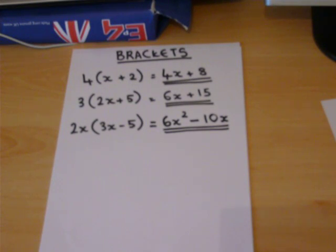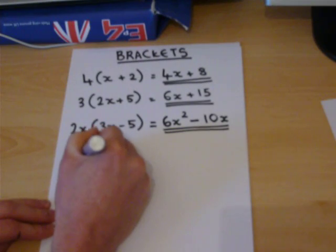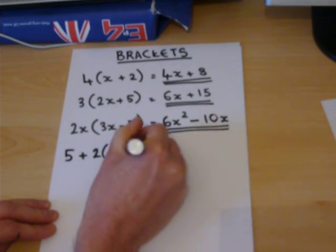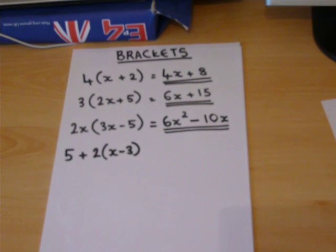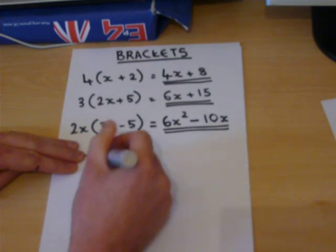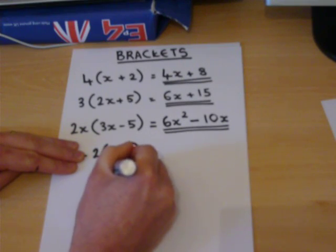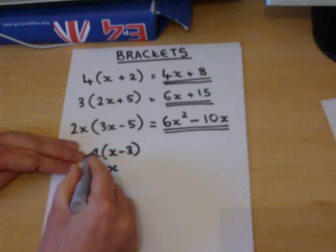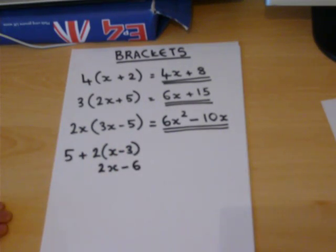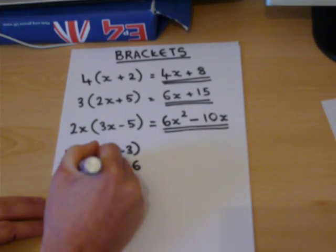Sometimes we get expressions which can have different parts to them. Now the general rule is to try to sort out the bracket part first. So if we ignore the 5, we have 2 times x, which is 2x. A 2 times a minus 3, which is minus 6. And there's a 5 at the start.